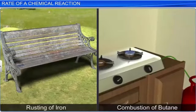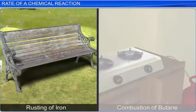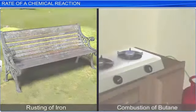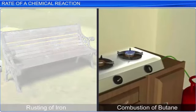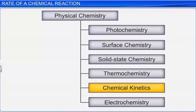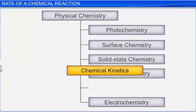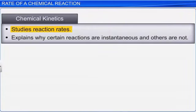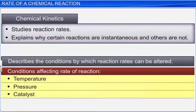There are some reactions which take place with a moderate speed. Photosynthesis is an example of a moderate reaction. Have you ever wondered why some reactions are slow while others are fast? Chemical kinetics is the part of physical chemistry that studies reaction rates and explains why certain reactions are instantaneous and others are not. It also describes the conditions by which reaction rates can be altered.